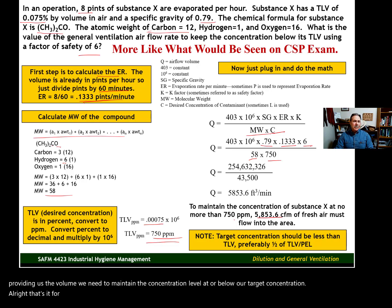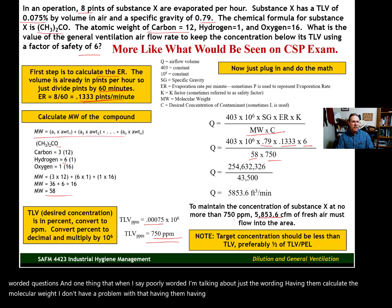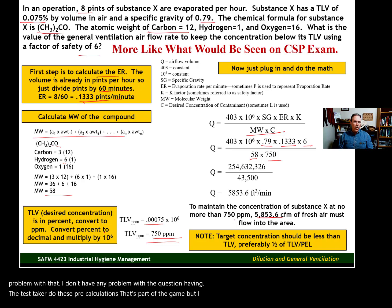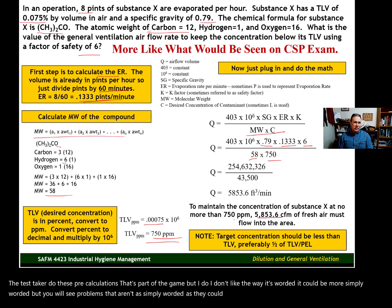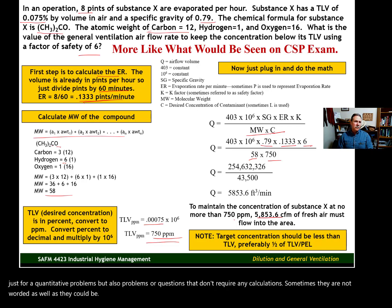That's it for this example. Be prepared — the CSP exam is not easy, and they sometimes make it harder with poorly worded questions. When I say poorly worded, I'm talking about just the wording. Having them calculate the molecular weight — I don't have a problem with that. Having you convert a percent to parts per million — I have no problem with that. I don't have any problem with the question having the test taker do pre-calculations; that's part of the game. But I don't like the way it's worded — it could be more simply worded. You will see problems that aren't as simply worded as they could be on the CSP exam, and that goes for both quantitative problems and questions that don't require any calculations. Let me know if you have any questions. I'll see you in the next video.